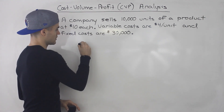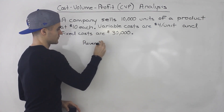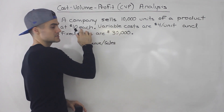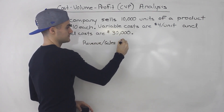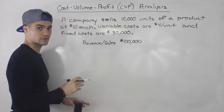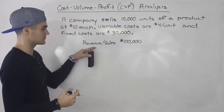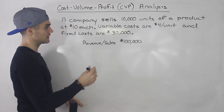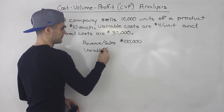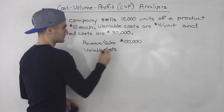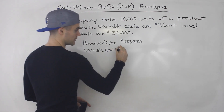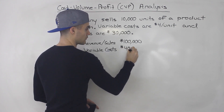First thing we start off with is the revenue or the sales — either works — so $10,000 times $10, which is $100,000. Now this income statement I'm about to make is going to be a little bit different than the one you're used to. After revenue, usually comes cost of goods sold, but in this case I'm going to put variable costs. The variable costs are $4 per unit and if you sell 10,000 units, multiplied together you'd end up getting $40,000 for the variable costs.